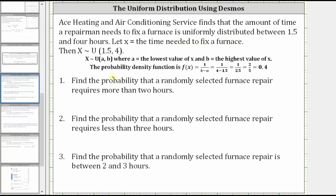The probability density function is f(x) equals one divided by the quantity b minus a, where b is the highest value of x and a is the lowest value of x, giving us f(x) equals one divided by 2.5, which can also be expressed as f(x) equals two-fifths or 0.4.